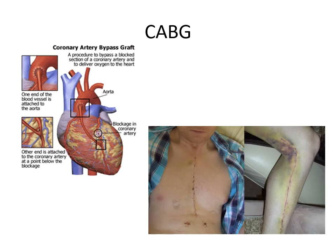Here you can see the famous chest scar from a CABG, along with the harvesting site which usually comes from the leg — that alternative vein is then used to redirect the blood flow.